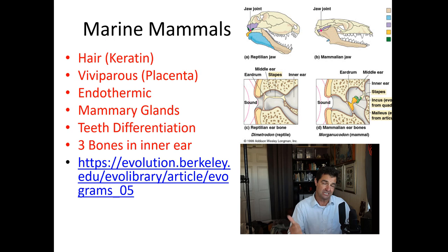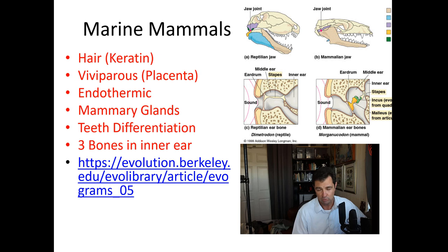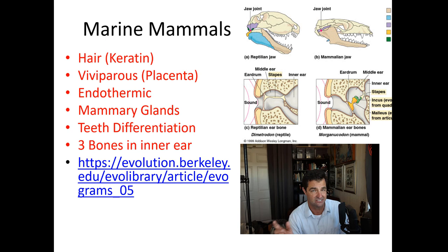Mammals are endothermic — like birds, they use their own metabolism to generate body heat. They also have mammary glands, which produce milk used to raise the babies after they are born. They have highly differentiated teeth, as we'll see in at least one example today, and they have three bones that make up the inner ear, which is different from their reptile ancestors, which have only one bone.